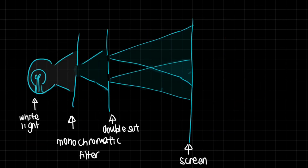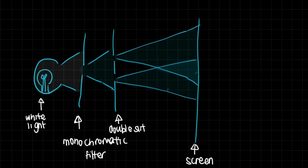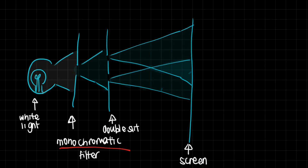If you had white light it would be problematic because white light contains all sorts of frequencies, and you only need one frequency for this experiment. So we put a monochromatic filter — a filter that only allows one color to pass through — over the double slit and then do the experiment. It's a very interesting experiment that helped to revolutionize what we think of as light.